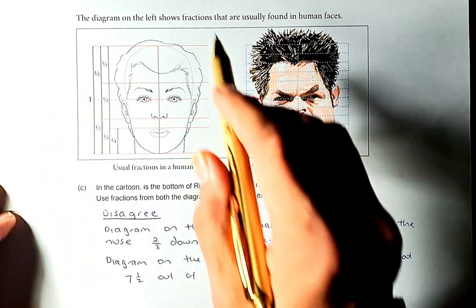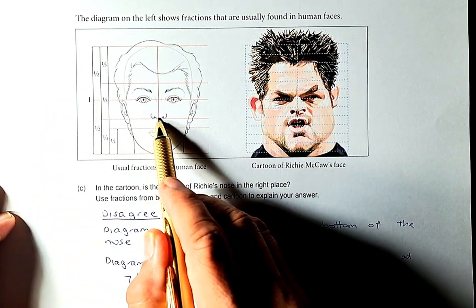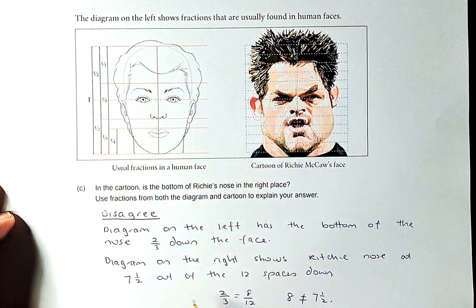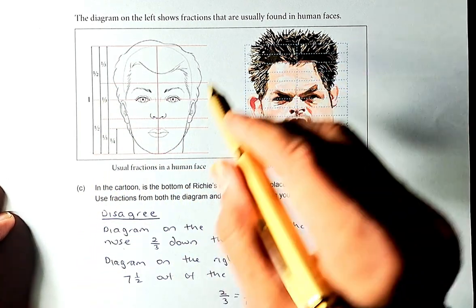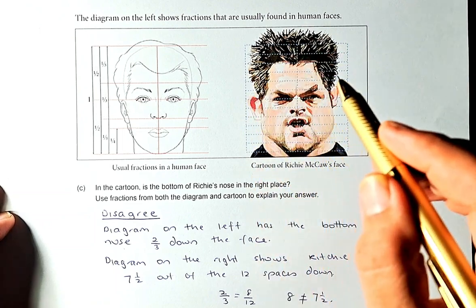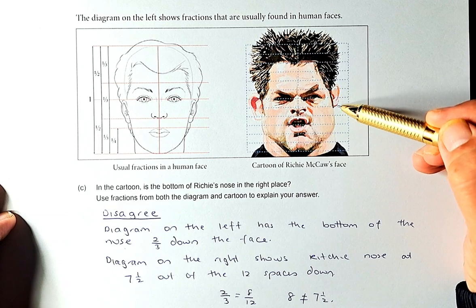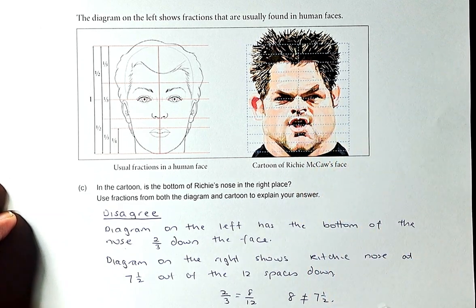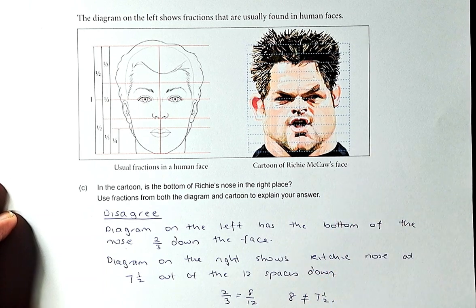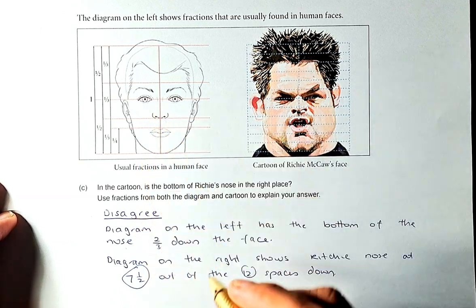You look at the first diagram on the left. The nose is at the bottom here. So it's going to be one-third and two-thirds down the face. So it is two-thirds down the face. In Richie McCaw's diagram on the right, you count 1, 2, 3, 4, 5, 6, 7. The nose is somewhere in the middle here. So it's going to be seven and a half out of 12 spaces. Seven and a half out of 12.